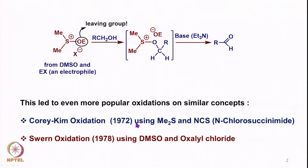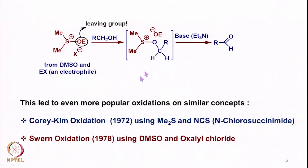The first is Corey-Kim oxidation, developed in 1972, where they used dimethyl sulfide and N-chlorosuccinimide as a reagent combination to give a species similar in concept to what we have discussed. Then there is Swern oxidation, a very popular reaction reported in 1978, where Swern used DMSO and oxalyl chloride to activate DMSO, leading to the same kind of intermediate and a similar type of oxidation — though it is more popular for reasons I will discuss today.